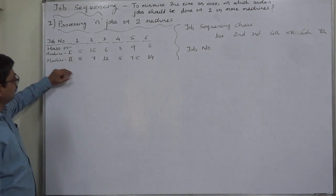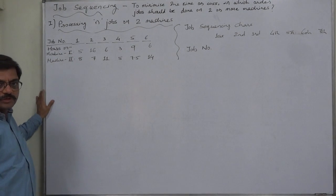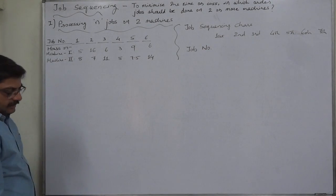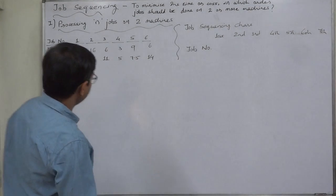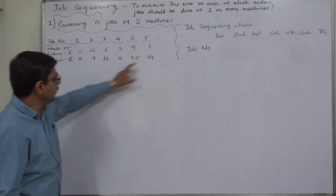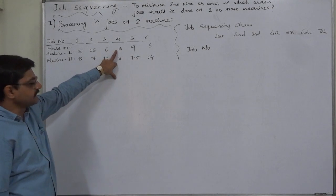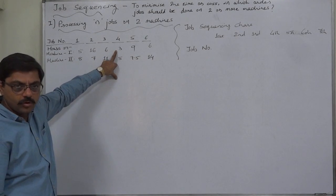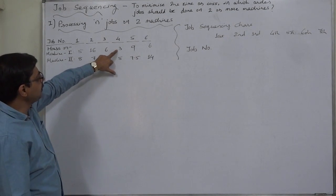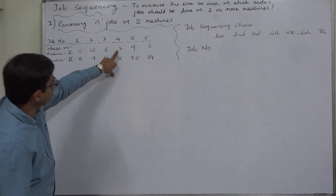Two machines: machine one and machine two. Logically, all the jobs are first processed on machine one and then they are processed on machine two. Now, Johnson's algorithm — first of all we need to find out the lowest time in the whole chart. That is three: job number four on machine one requires three hours. That means the minimum time, or the least time, is on machine one.